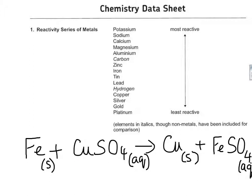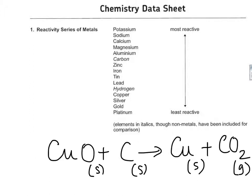Consider heating copper oxide strongly with carbon — since copper is less reactive than carbon, carbon can take the place of copper, and that is exactly what happens in copper extraction. However, if you try the same process to extract aluminium from aluminium oxide, it will not work because carbon is less reactive than aluminium. This method only works for metals that appear below carbon in the reactivity series, and we focus on copper and iron — both below carbon.